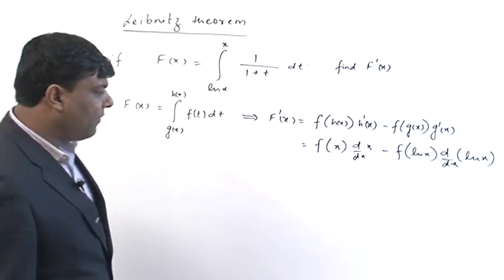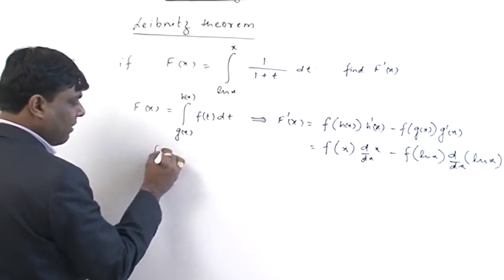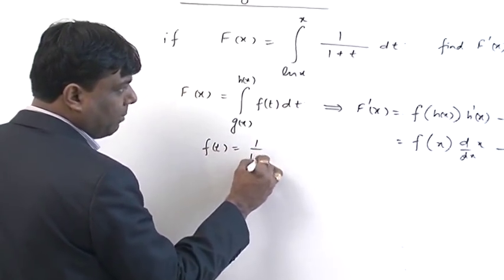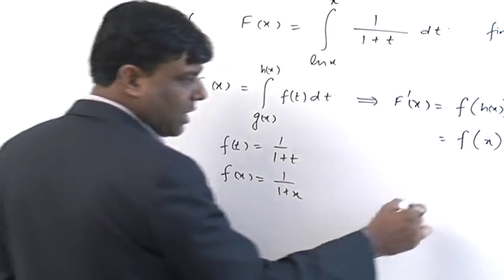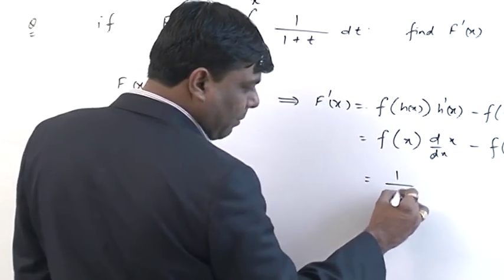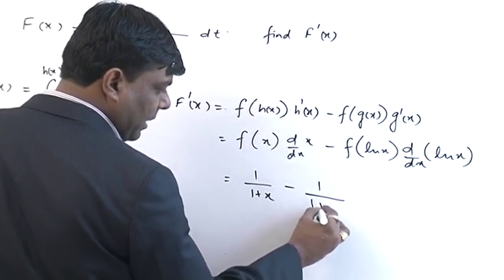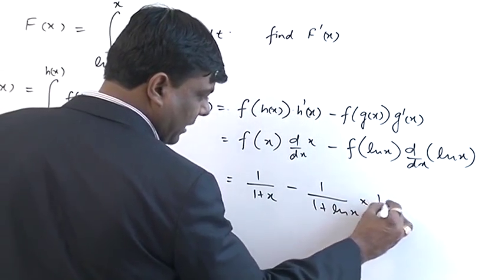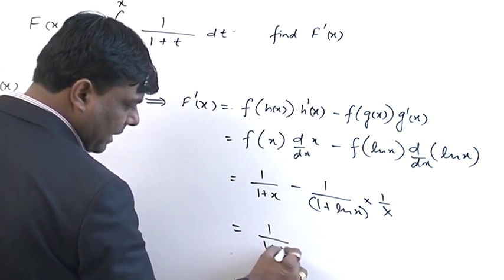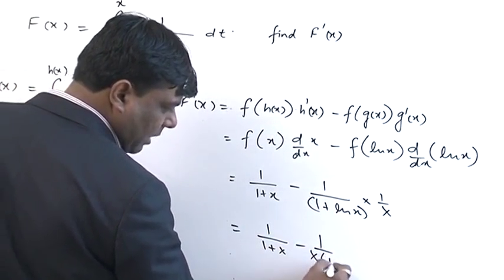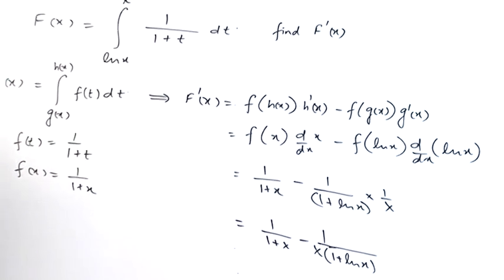Now, our result comes. What is f of x? Since f(t) = 1/(1+t), that means f(x) = 1/(1+x). So the expression becomes: 1/(1+x) times 1, minus 1/(1+ln x) times 1/x. That gives 1/(1+x) minus 1/(x(1+ln x)). That is the overall result for this differential.